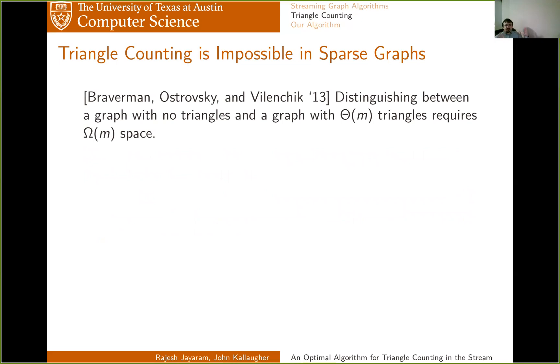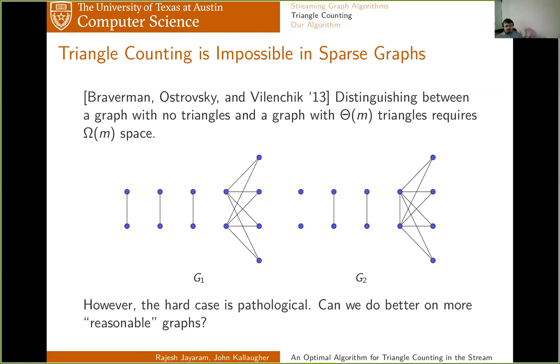Unfortunately, this result of Braverman, Ostrovsky, and Vilenchik tells you that no, you can't. Even if you assume that there are omega of M triangles in a graph, there is a family of graphs which includes graphs with zero triangles and omega of M triangles, such that distinguishing between the two requires omega of M space.